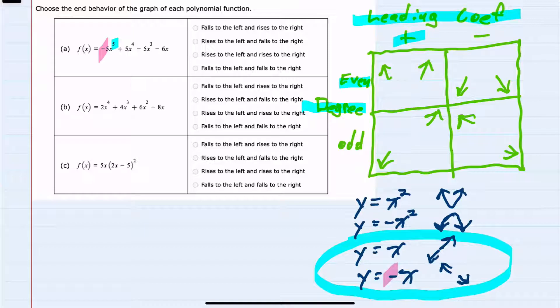that tells me that we're going to have this bottom option here where it's going up to the left, rising to the left, but then falling to the right. So rising to the left, falling to the right would be this option.